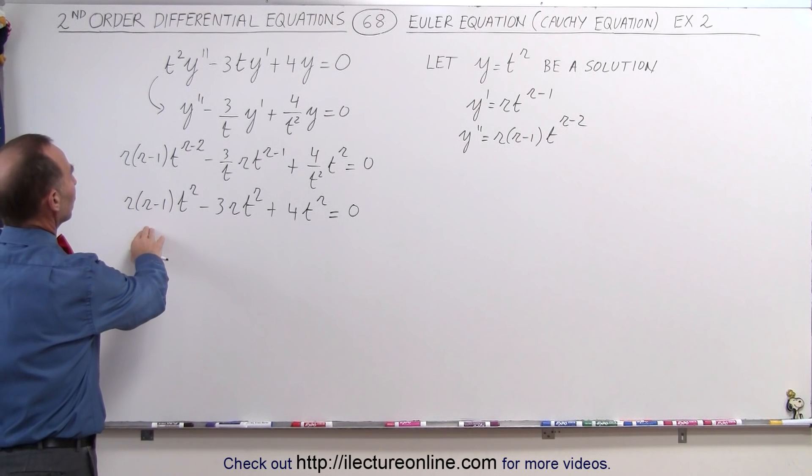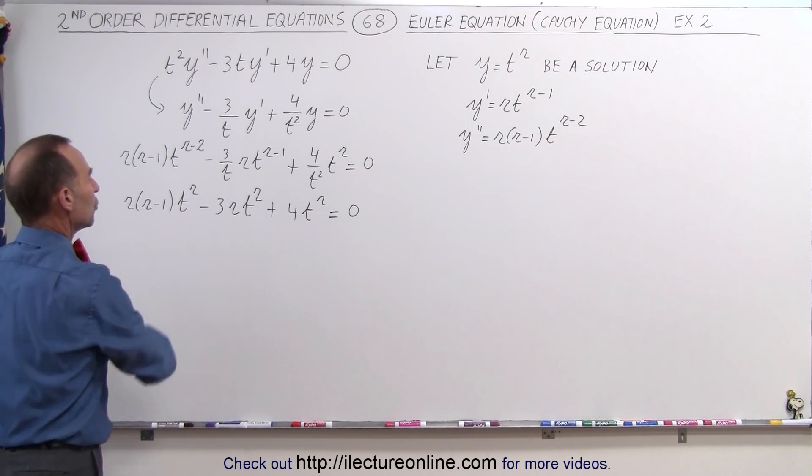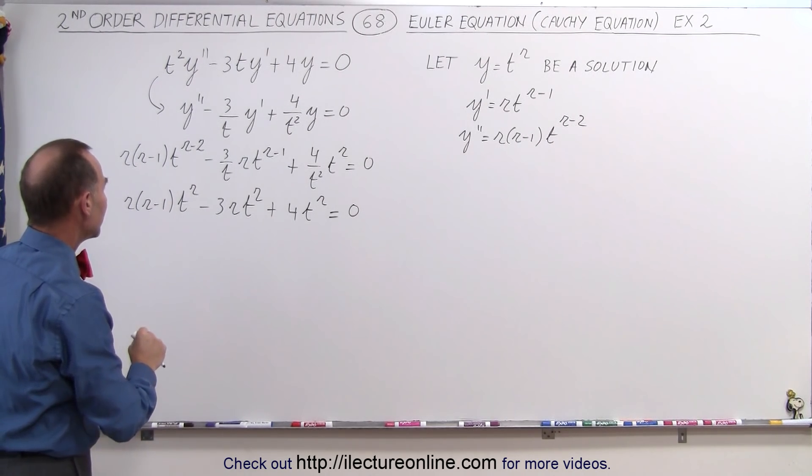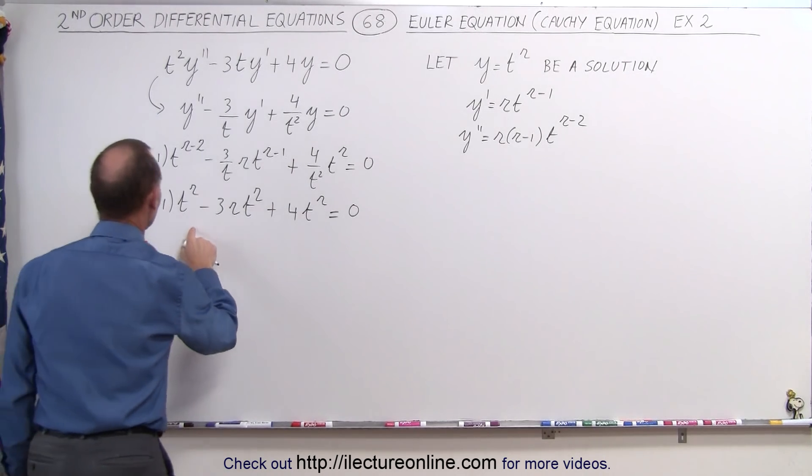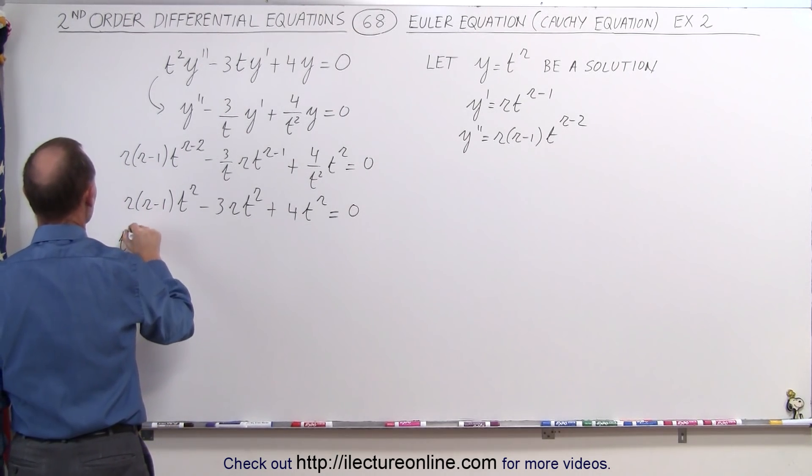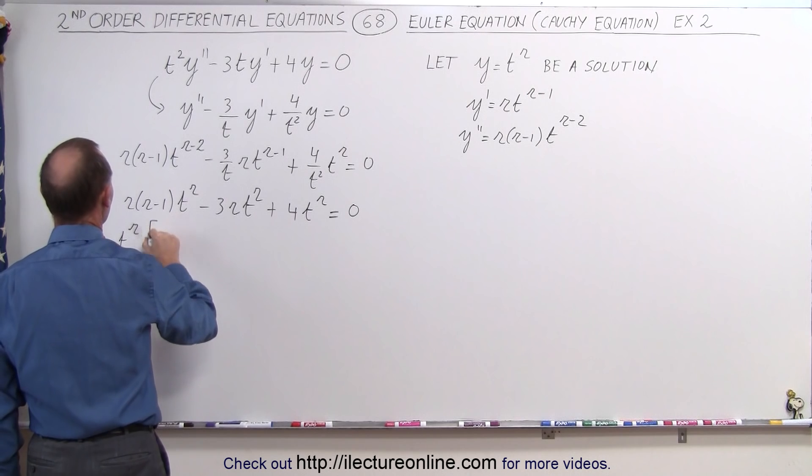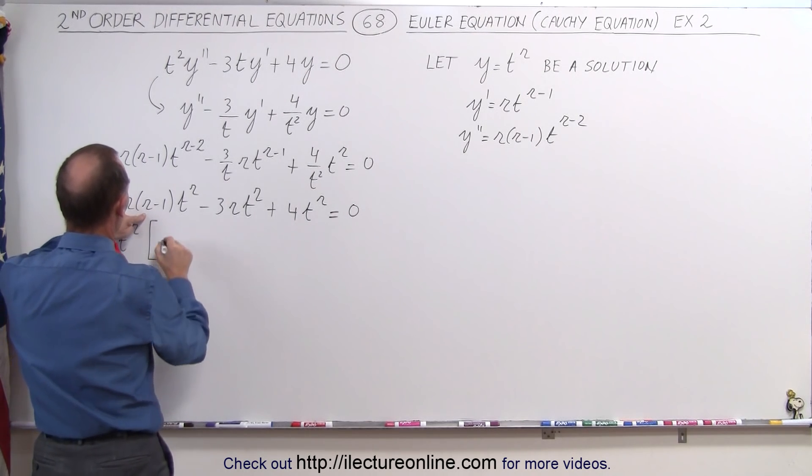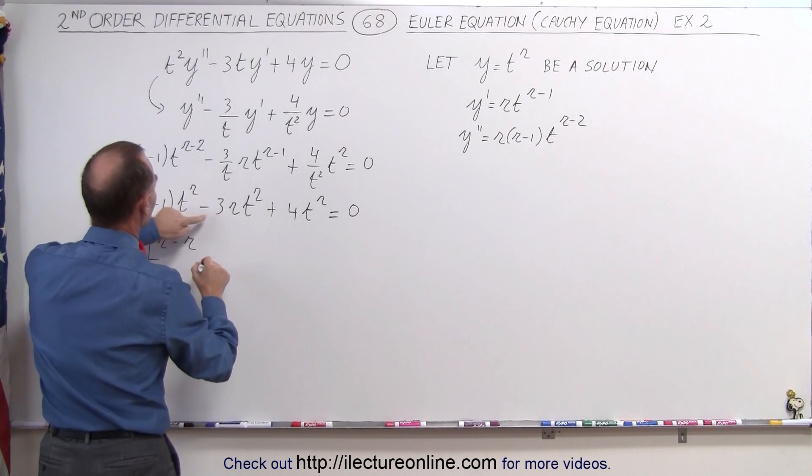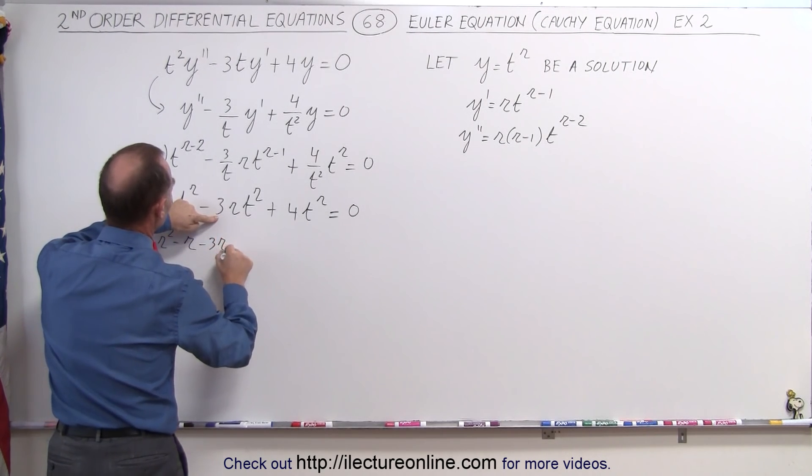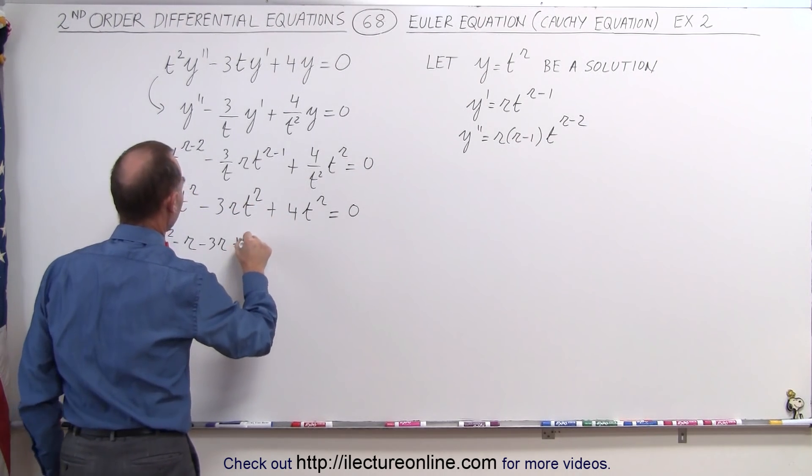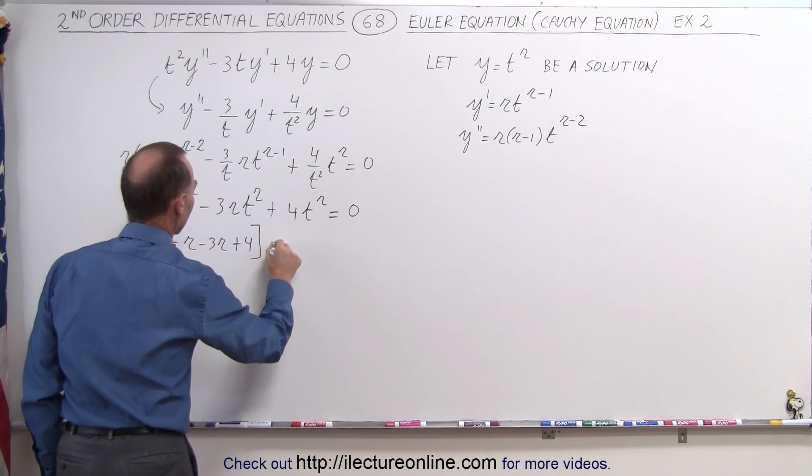Now we're going to factor out t^r. When we do that, we get t^r times, so here we have r², r times -1 gives us -r, minus 3r, and plus 4. And that equals zero.